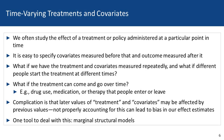So what do I mean by time-varying treatments and time-varying confounding? In very simple cases, we often study the effect of a treatment or a policy administered at a single point in time. It's easy to specify covariates measured before the treatment is applied and an outcome measured after. But what happens if we have a treatment and covariates that are repeatedly measured over time, if people start treatments at different time points, or if a policy is rolled out over time with different organizations taking up that policy at different times?